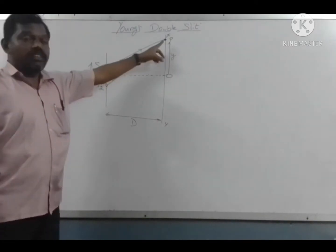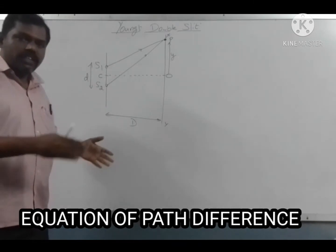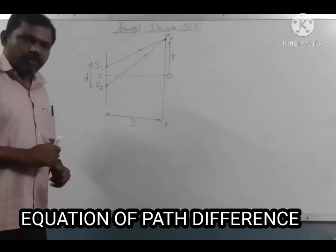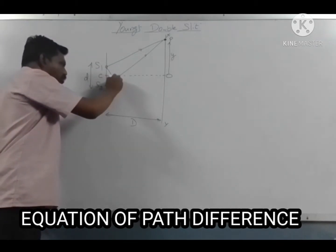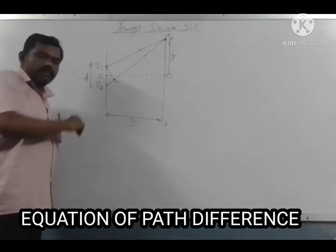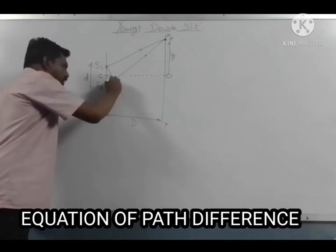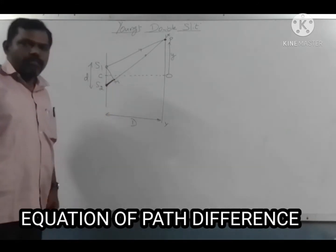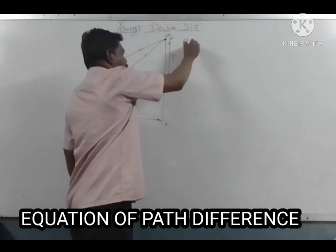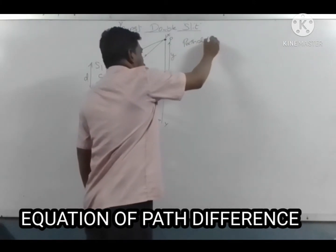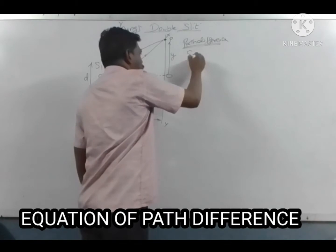Light from S1 and S2 travels to point P. There is a path difference between the two rays. The extra path difference is S2M, where M is the foot of the perpendicular. So the path difference delta equals S2M.